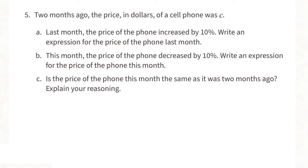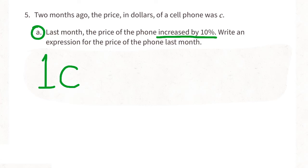Problem number 5. Two months ago the price in dollars of a cell phone was C. A. Last month the price of the phone increased by 10%. Write an expression for the price of the phone last month. 1C or C represents the price of the phone two months ago.